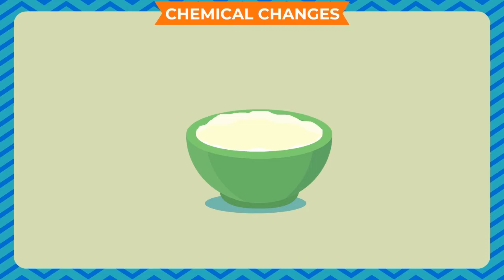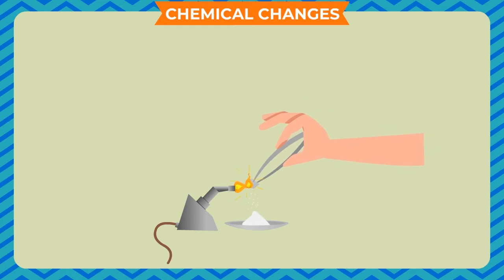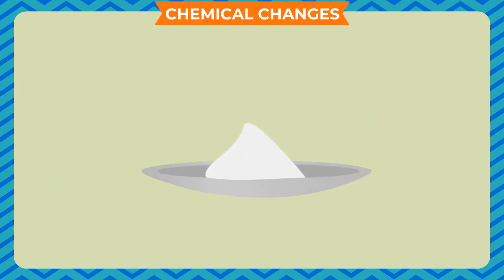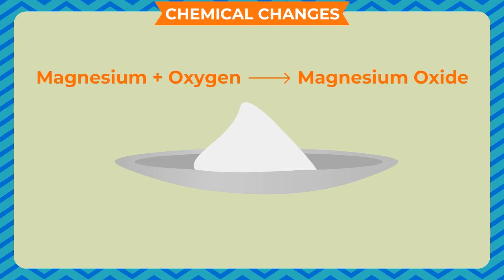Take a piece of magnesium ribbon and hold one end with a pair of tongs. Heat its other end over a burner or spirit lamp. We observe it starts burning with a dazzling white flame and produces dense white fumes. Let the magnesium ribbon burn completely. The white fumes on cooling form a white powder called magnesium oxide — it is a new substance and its properties are different from that of magnesium. The change can be represented as: 2Mg + O₂ → 2MgO. You cannot obtain magnesium back from magnesium oxide by any method. Hence, it is a chemical change which is permanent and irreversible.